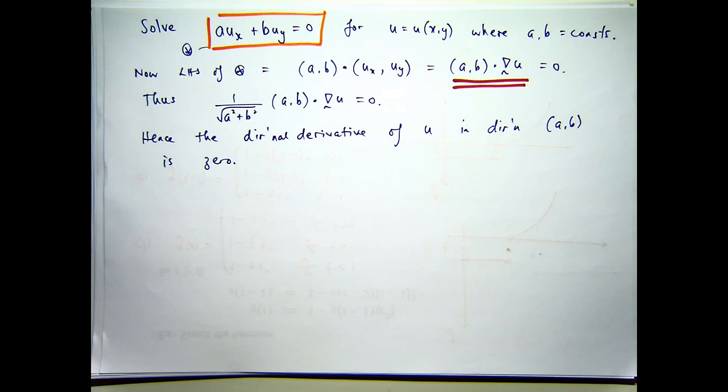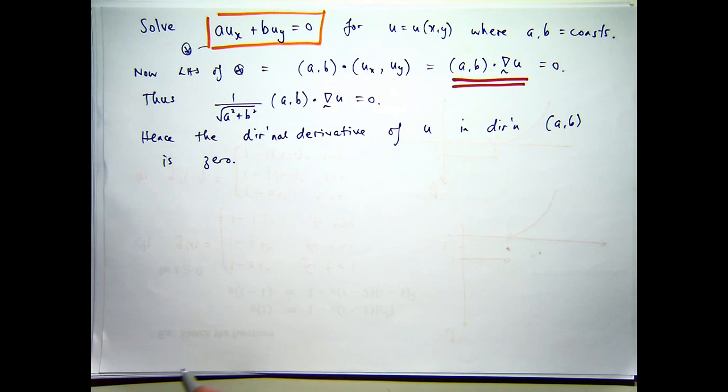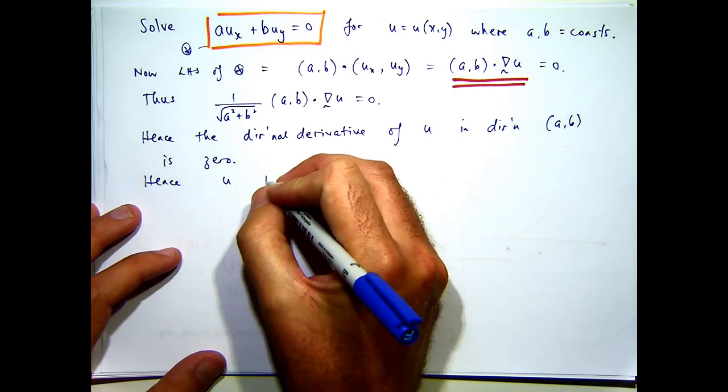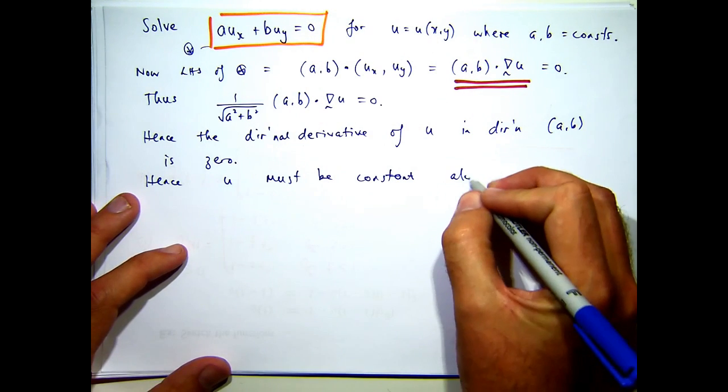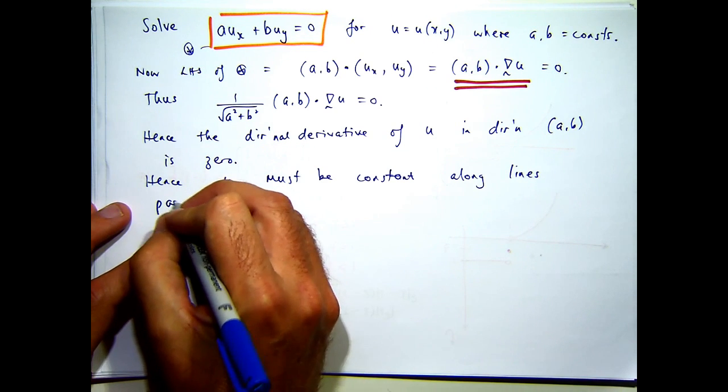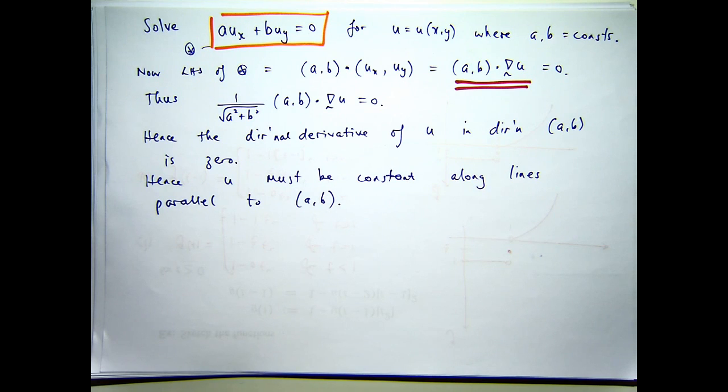So what does that mean? Well, essentially it means that the solution must be constant. If you've forgotten about the directional derivative, just think of the word derivative. If the derivative of something is zero, the function has to be constant, right? So what this says is that u must be constant along lines parallel to the vector AB. Let me just draw you a little picture and see what's going on.